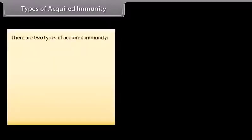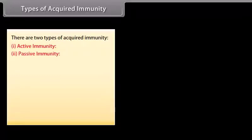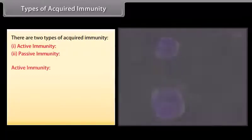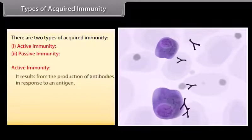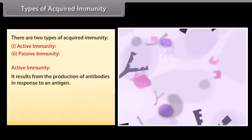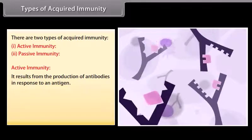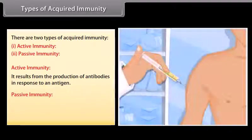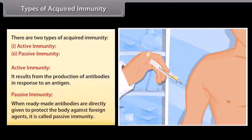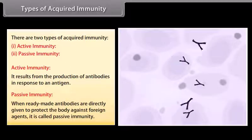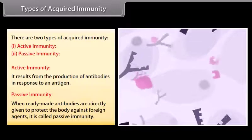There are two types of acquired immunity: active immunity and passive immunity. Active immunity results from the production of antibodies in response to an antigen. Passive immunity is when ready-made antibodies are directly given to protect the body against foreign agents.